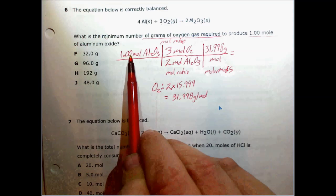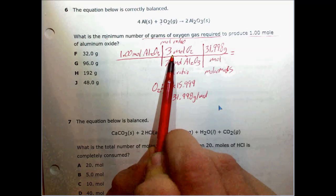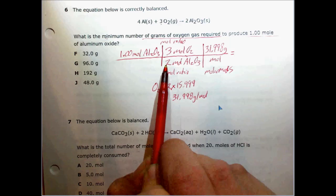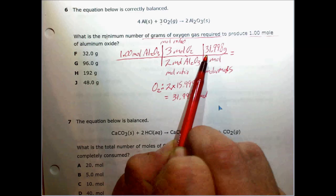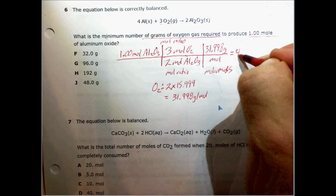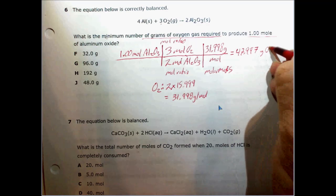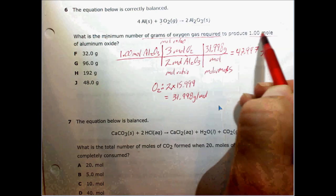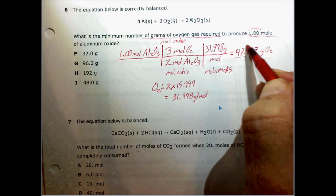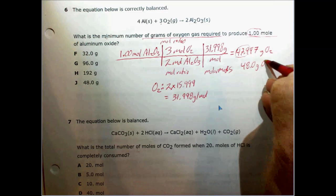Now all we have to do is the math. We start with 1 mole, multiply by 3, then divide by 2. Remember: multiply everything on top and divide by everything on the bottom. Then multiply by 31.998, and we get 47.997 grams of O2. Rounding to three significant figures, we get 48.0 grams of O2.